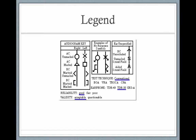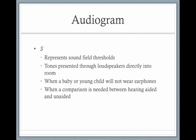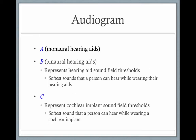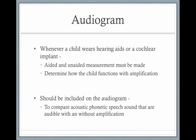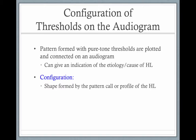If you see a line going off the page, that means there is no response — the child has no hearing at that frequency. S represents when the child is tested in sound field, when the child wouldn't wear earphones and you couldn't get ear-specific information. A is when tested with monaural hearing aids, B when wearing binaural hearing aids, and C when in cochlear implants. Whenever a child is tested with hearing aids or cochlear implants, you always get both aided and unaided measures to compare.